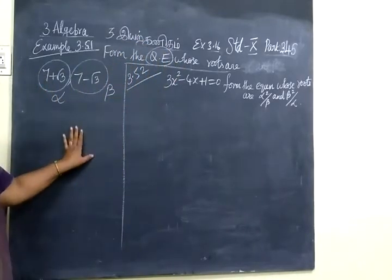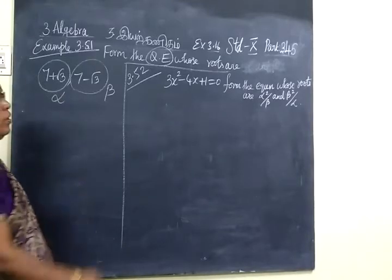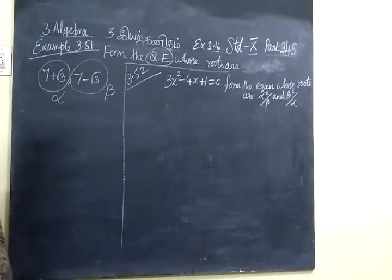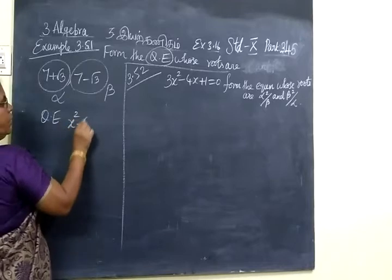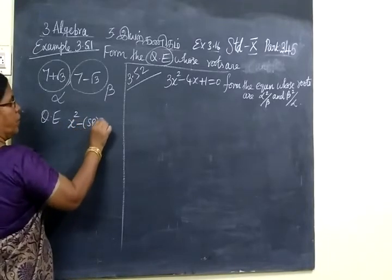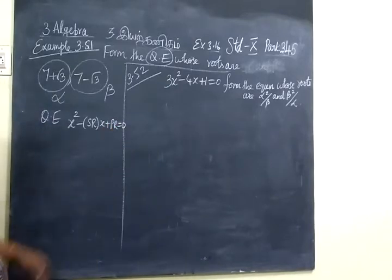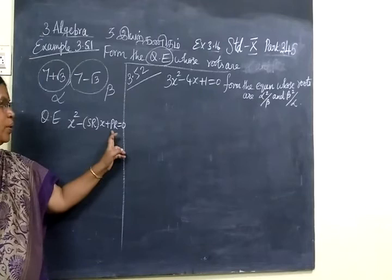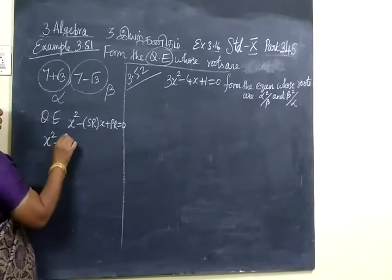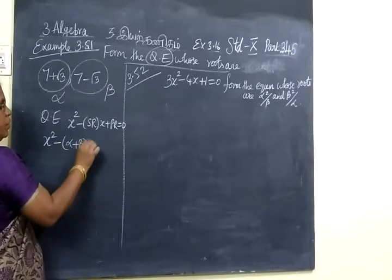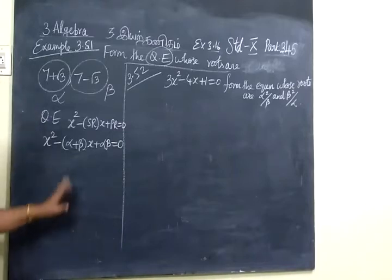In the previous class you found the value of a given problem. In this question, you are finding the quadratic equation. To find the quadratic equation, we know the formula: x squared minus (sum of the roots) x plus (product of the roots) equals 0. SR means sum of the roots, PR means product of the roots. Or in another way, you can write it as x squared minus (alpha plus beta) x plus alpha beta equals 0.